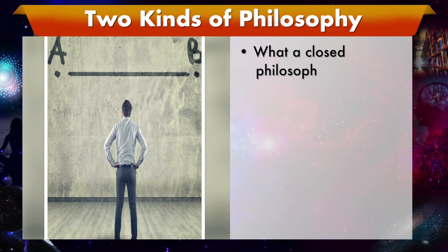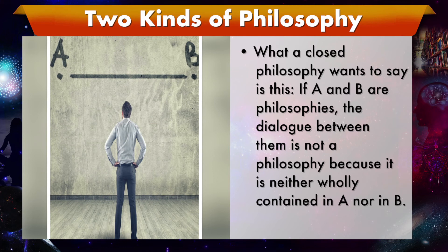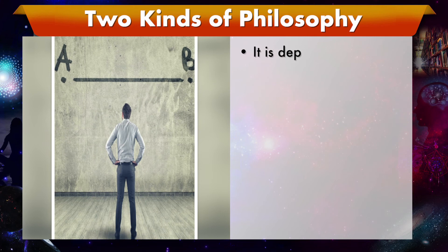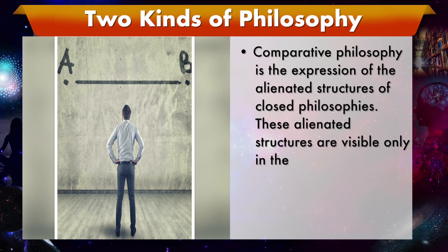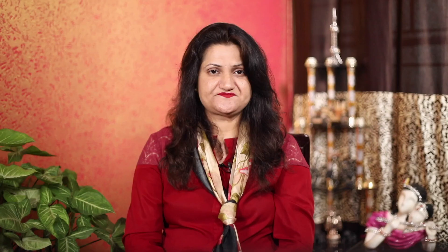What a closed philosophy wants to say is this: if A and B are philosophies, the dialogue between them is not a philosophy, because it is neither wholly contained in A nor in B. What I want to say is this: since it is neither wholly contained in A nor in B, therefore it is a new phenomenon — it is a public dialogue which has its own value. It is dependent on A and B for its creation, but its function goes beyond A and B. Comparative philosophy is the expression of the alienated structures of closed philosophies. These alienated structures are visible only in the light of comparative function. A closed philosophy tries to understand comparative function in terms of its own structures — that is why it denies the possibility of comparative philosophy. But if we try to understand structure in terms of function, the possibility of comparative philosophy seems absolutely evident.